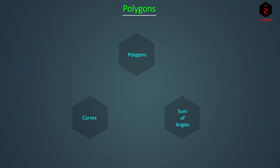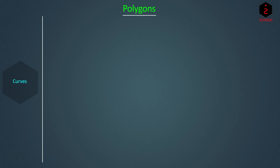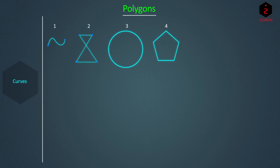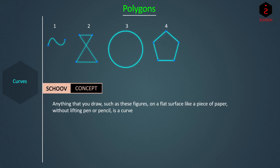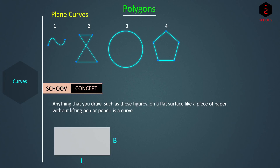Let's begin. What are curves? Let's draw some figures and understand. Figure one has two end points. Figure three has no end point, or we can say it has the same beginning and end points. Figure two has many points and is made up of line segments, and figure four is also completely made of line segments and has many points. Anything that you draw on a flat surface like a piece of paper without lifting your pen or pencil is a curve. A flat surface has length and breadth but no height, so these curves are called plane curves.